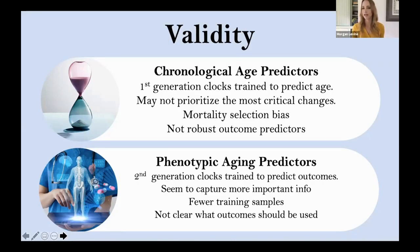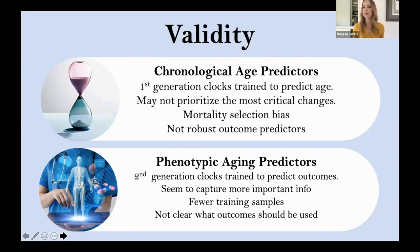Another issue is mortality selection. If you're getting very accurate age predictions for people who are 80, 90, or 100, those are probably not biomarkers that actually have an impact on mortality. Because people who are 90 or 100 are not some random subset of their original birth cohort — they're actually the most resilient, selective people. So they actually should be predicted younger than they are, and if you're getting good age predictions in them, you're probably not measuring things that actually have an impact on mortality.